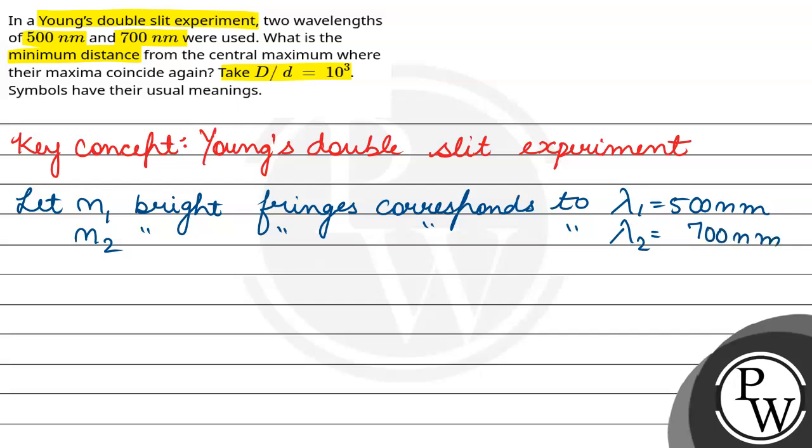Now, when we say that N1 maximum of lambda 1 coincide with N2 maximum of lambda 2. So, N1 lambda 1 D by d equals to N2 lambda 2 D by d.